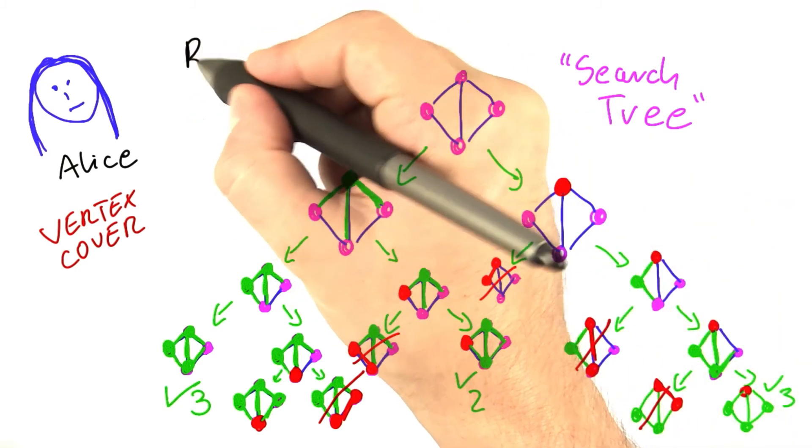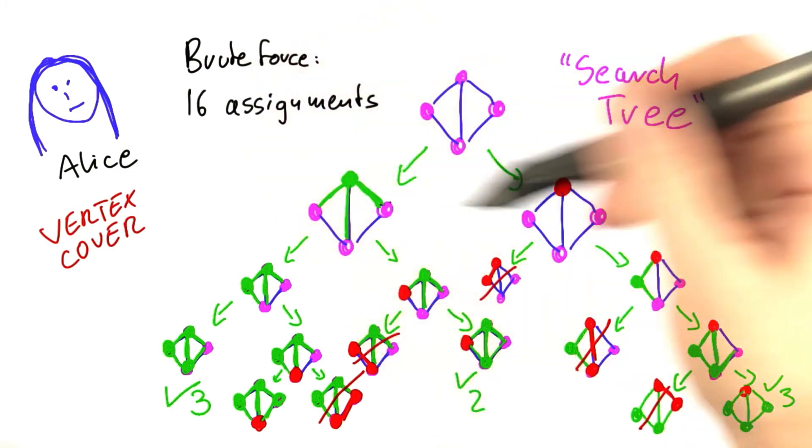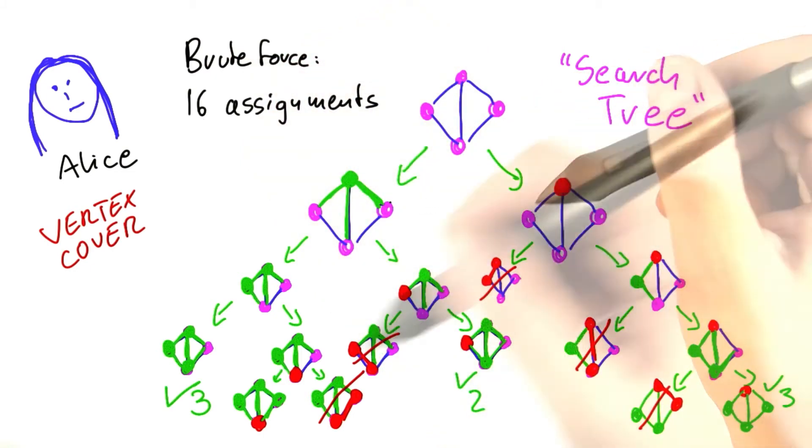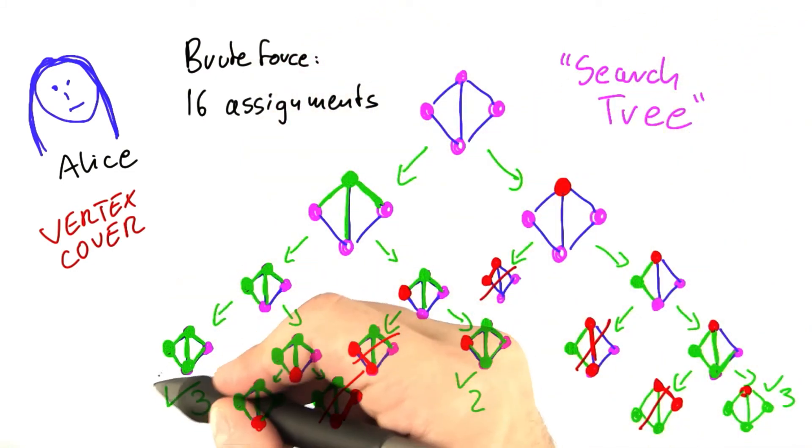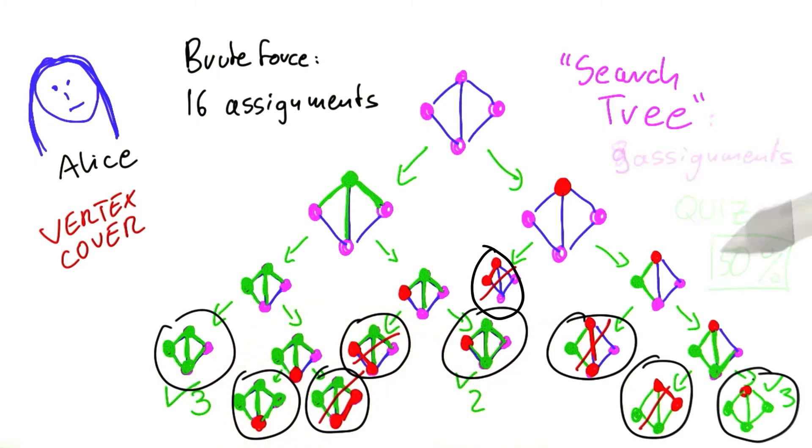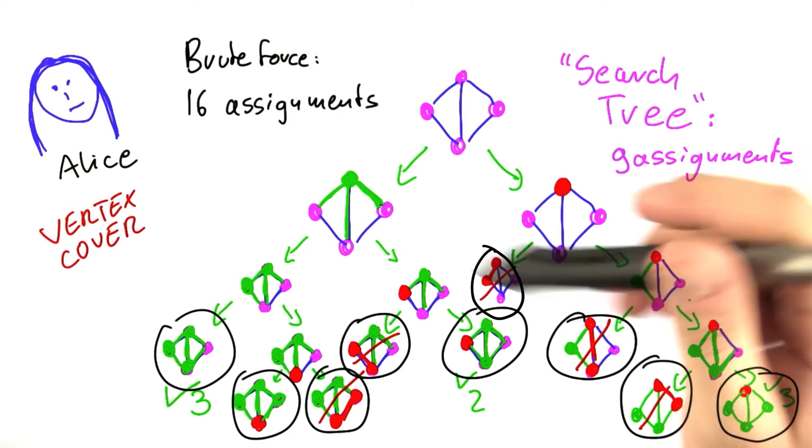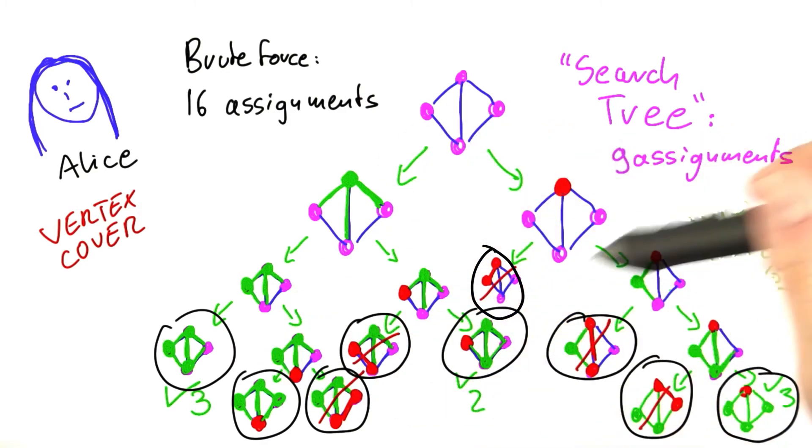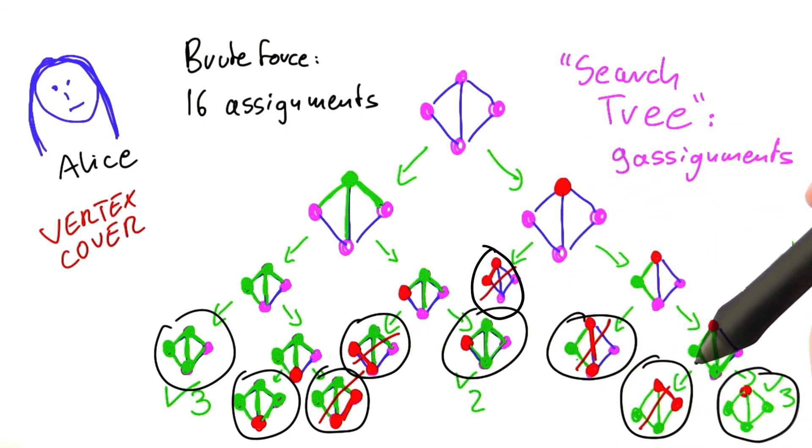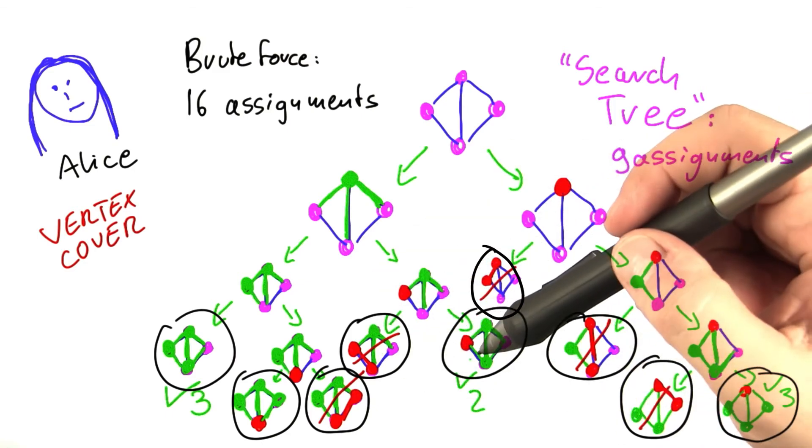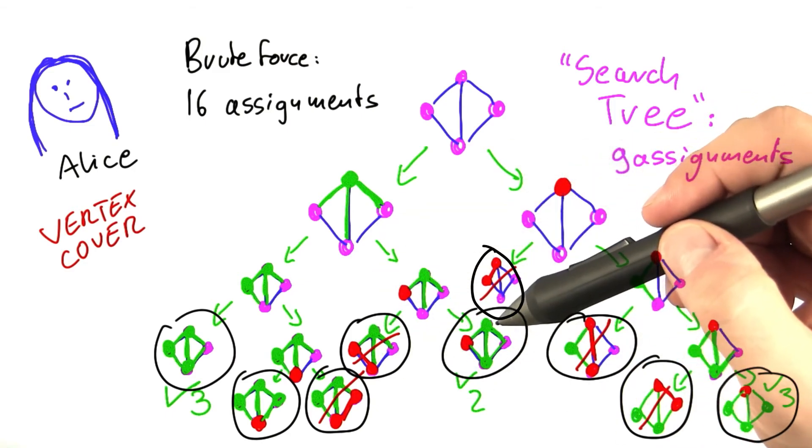Originally, we had with brute force 16 assignments of zero and one to the vertices that we needed to check. And now this algorithm here only considered nine assignments. So I told you at the beginning of this course that constant factor speedups probably don't matter that much when we're dealing with exponential time algorithms. So we will have to do some further analysis on this one.